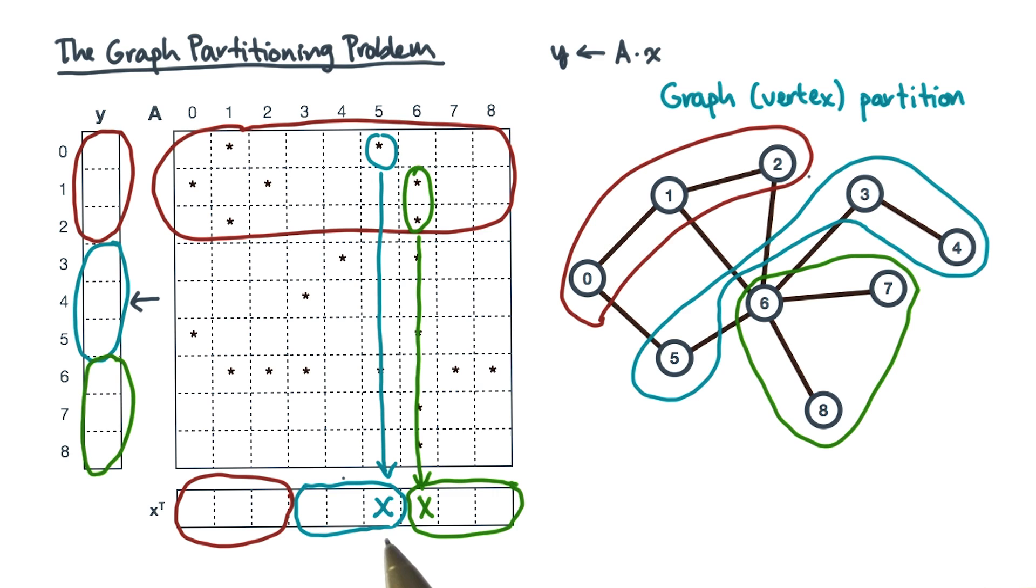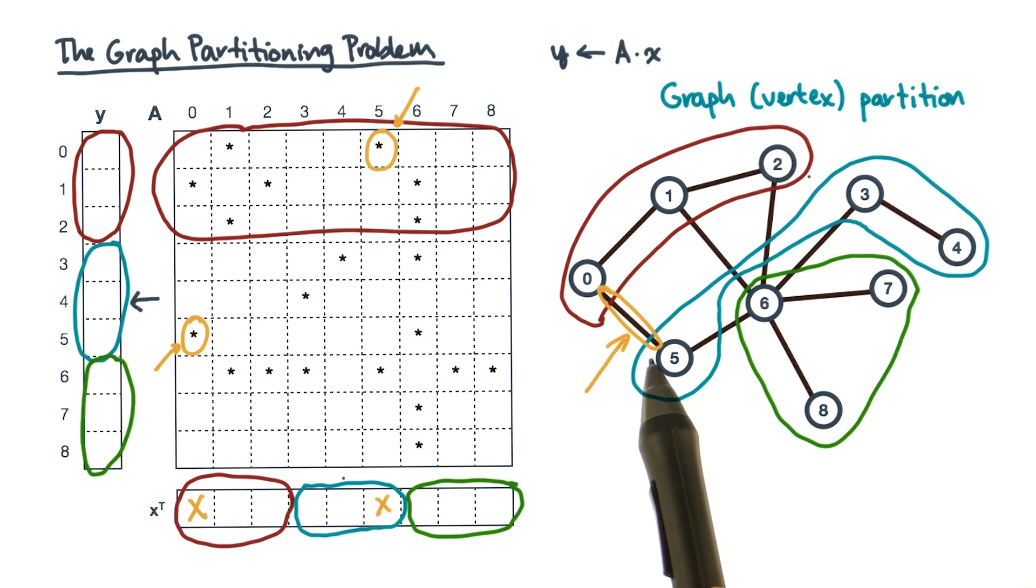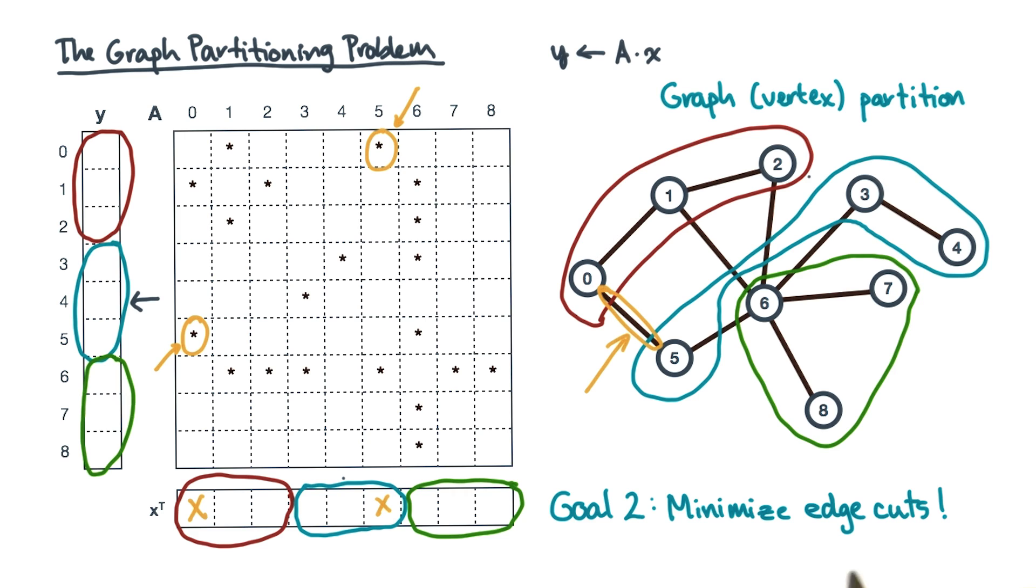In the language of graphs, these communication exchanges happen anytime an edge crosses a process boundary. For instance, these two non-zeros correspond to this edge. The two processes that own the endpoints of the edge will need to communicate. This observation suggests a second goal. To minimize communication volume, you prefer to reduce the number of edge cuts.